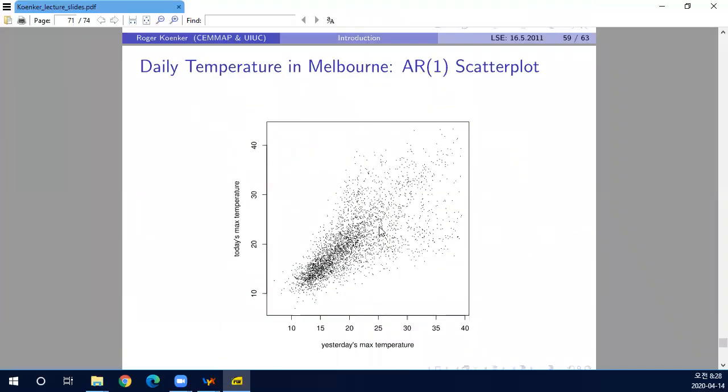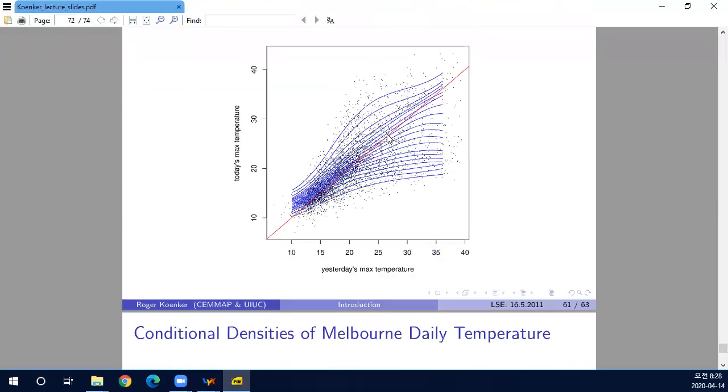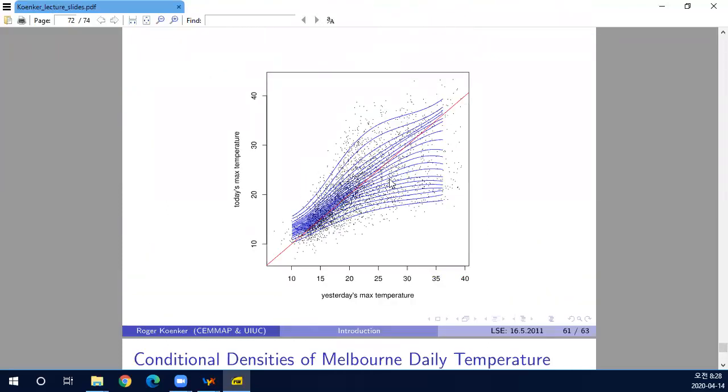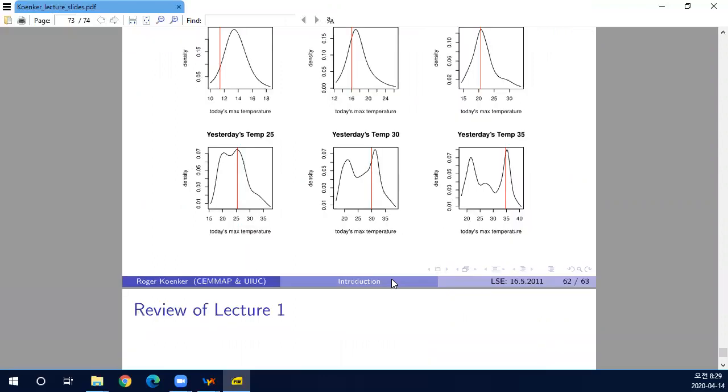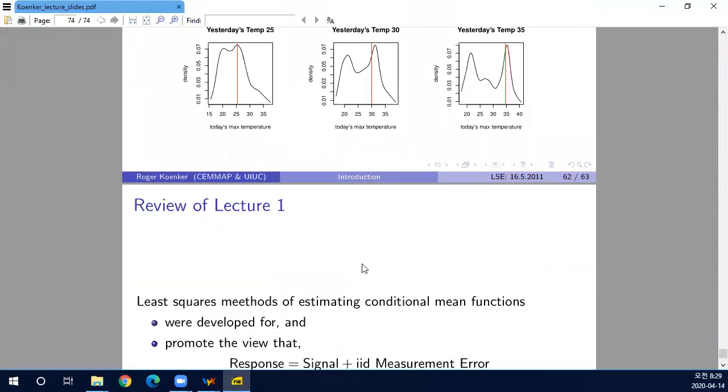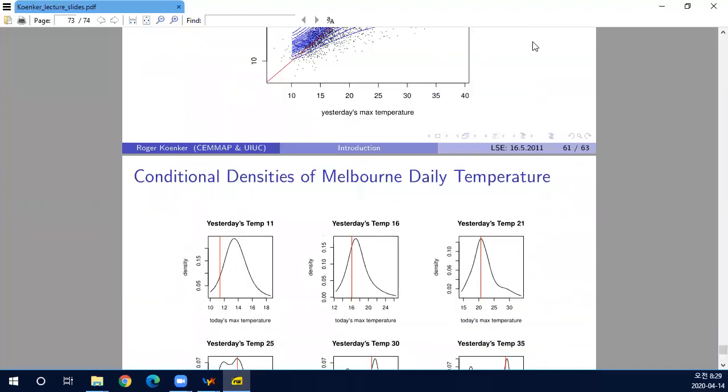And that's that. Here, this is another example, forecasting of daily temperature in Melbourne. If yesterday was cold, then today would be cold, but the correlation could be different across different quantiles. So at different levels of temperature, the distribution of tomorrow's distribution is quite different. So quantile regression can capture this. These are more actual examples of practical examples.